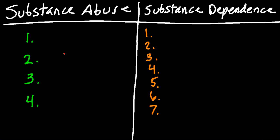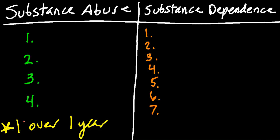When talking about substances, we have substance abuse versus substance dependence. They'll give you a scenario, list off some traits, and want to know: is this patient abusing a substance or are they dependent on it? For substance abuse, all you need for diagnosis is one of the following four criteria over the course of one year.